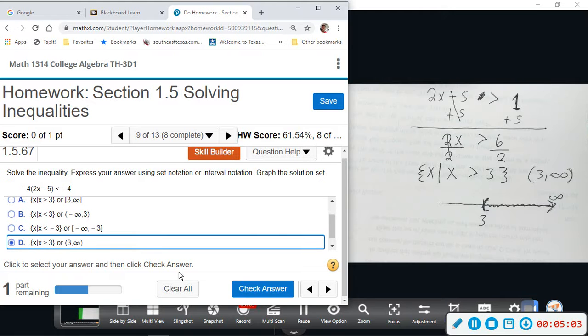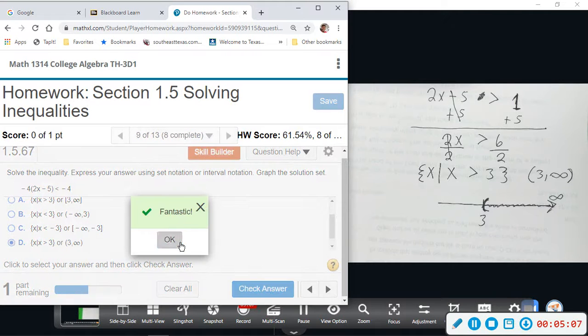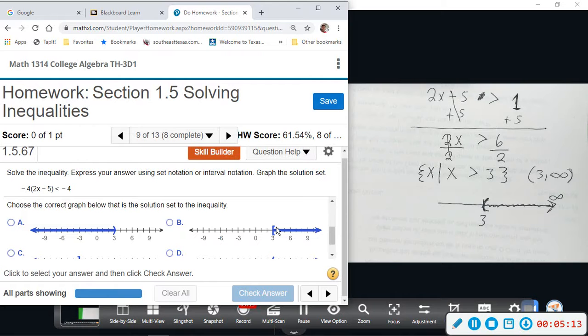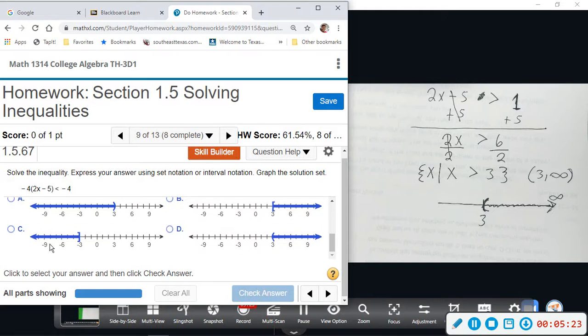So D is going to match my set and interval notation, and continue to part 2. The number line should be 3 going to positive infinity. That's going to negative, this is a square bracket, this is going to negative with square bracket. D is going from 3 to positive infinity, so D is the number line.